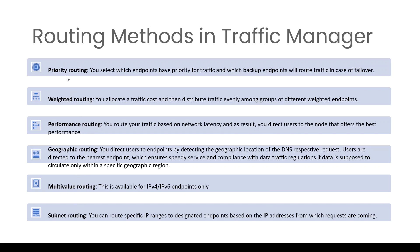In priority routing, let's say you have two applications — one will act as primary and another will act as secondary, the backup. All your traffic will go to the primary application.